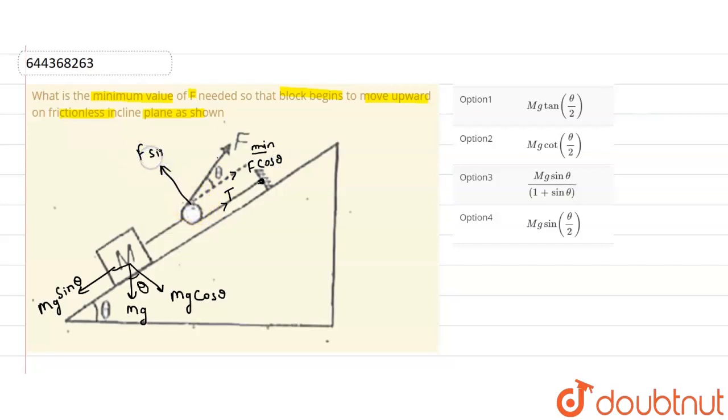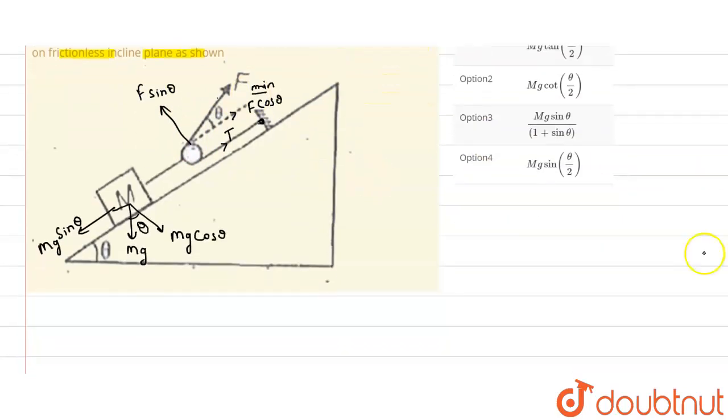So now students, we have drawn the free body diagrams and let us equate the equation. So we can see that this mg sin theta is equal to this T tension plus this F cos theta. How does this F come? So we know that we have resolved it through this. So now we can say that mg sin theta and this tension is also the force.